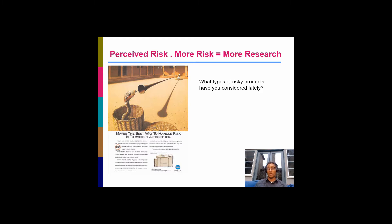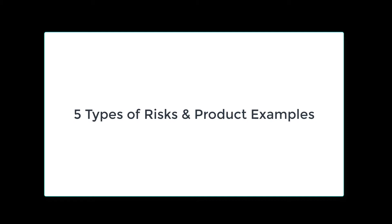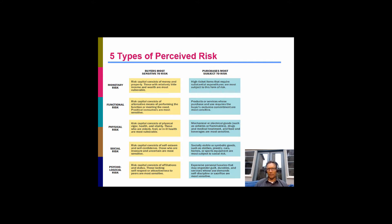Another factor that drives a cognitive decision-making process for purchasing products is the amount of risk involved in purchasing that product. When there's more risk, we want more information, we do a more extensive search, and we're in a cognitive decision-making process. Think about what types of risky products you've considered lately — did you do a fair amount of research and were you in a cognitive decision-making process?